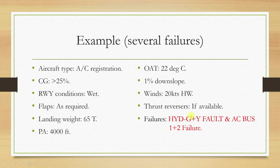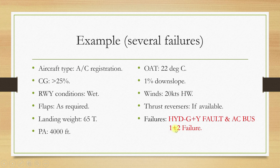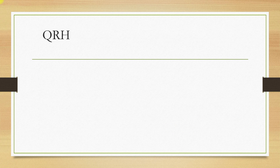The green plus yellow hydraulic fault itself suggests that both thrust reversers will be inoperative, because the green hydraulic system drives the thrust reverser of engine number 1 (the left engine) and the yellow system operates the thrust reverser of engine number 2. Our AC bus 1 plus 2 failure suggests that we are going to enter into the emergency electrical configuration.